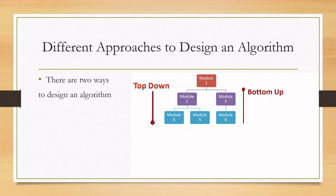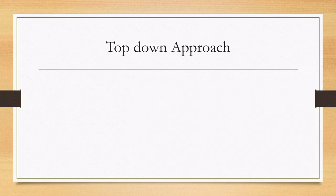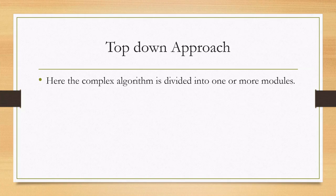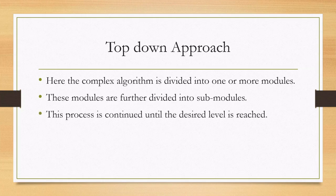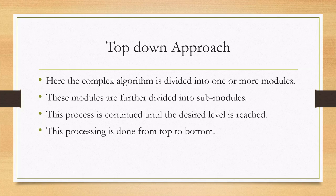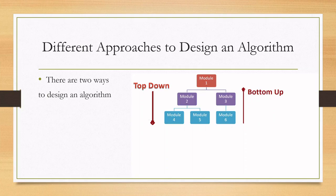There are two ways to design an algorithm: the top-down approach and the bottom-up approach. In the top-down approach, the complex algorithm is divided into one or more modules. These modules are further divided into sub-modules, and this process is continued until the desired level is reached. The processing is done from top to bottom — a complex algorithm is divided into a number of modules, then divided again until a specified level is reached.